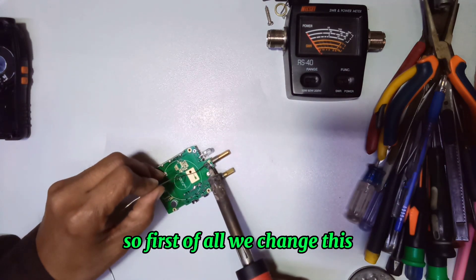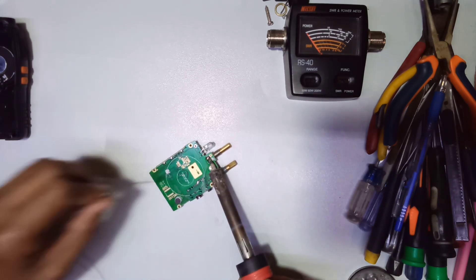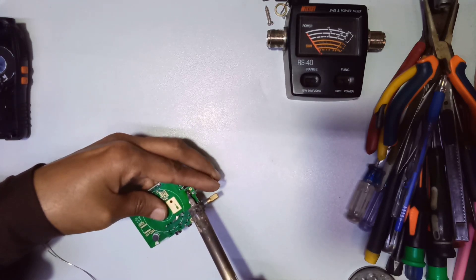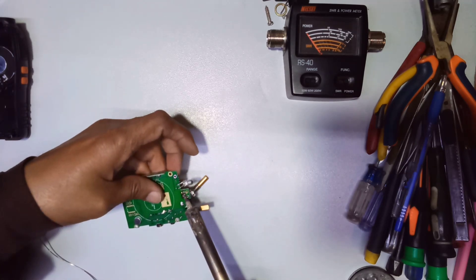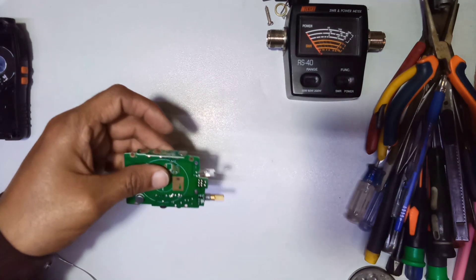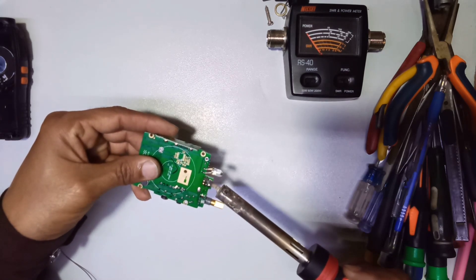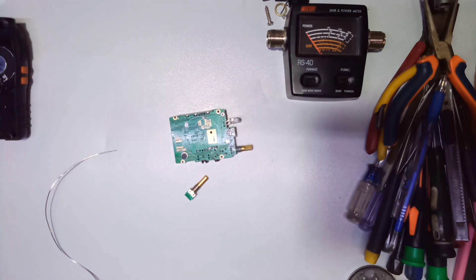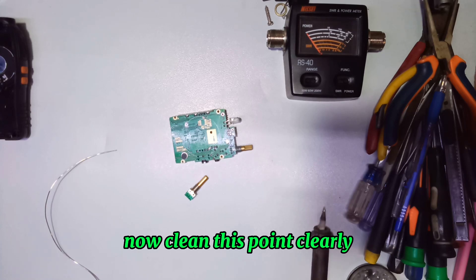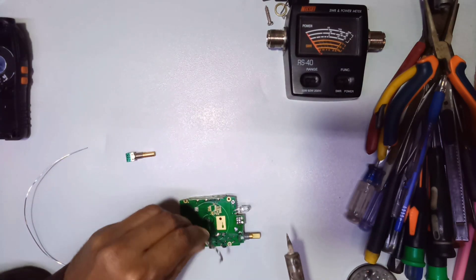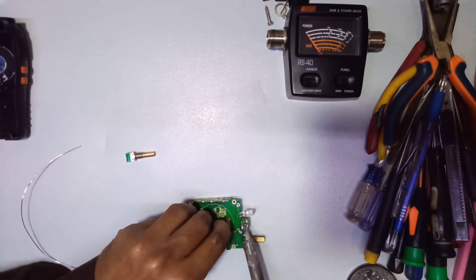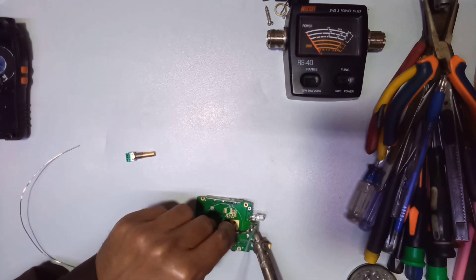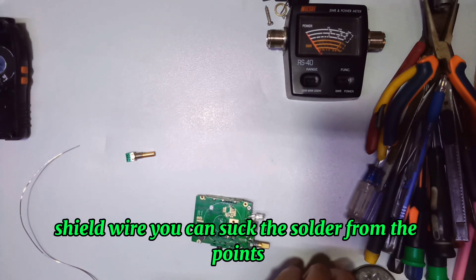So first of all we change this. Remove this first. Now clean these points clearly. Clean these points first with the help of solder sucker. You can suck the solder from the points.